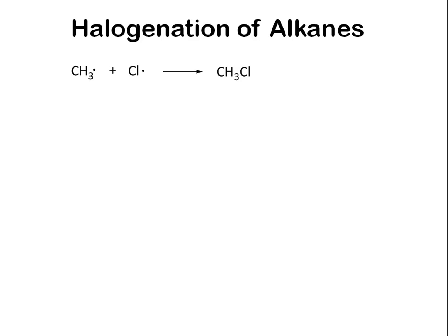The final type of reaction that can occur is when two radicals combine to form a molecule, such as a methyl radical reacting with a chlorine radical. This is known as termination. Other examples of termination include combination of two methyl radicals to form ethane and combination of two chlorine radicals to form a chlorine molecule.